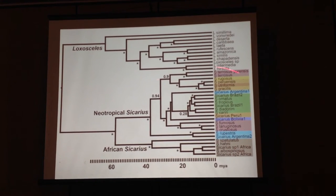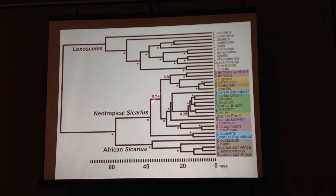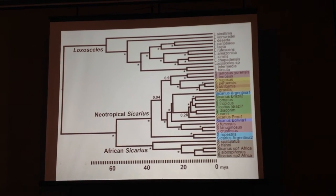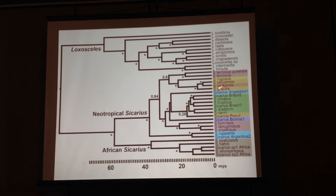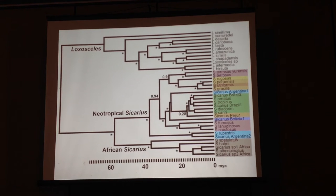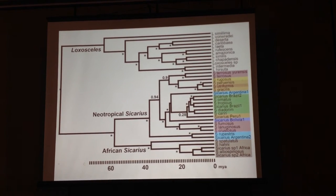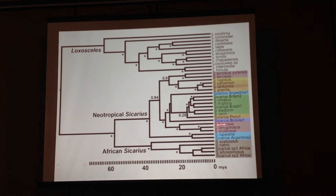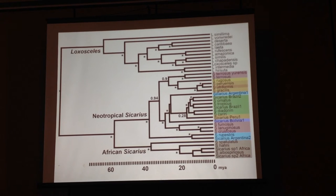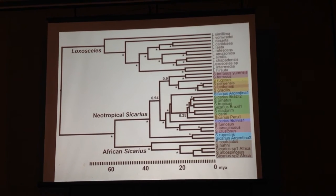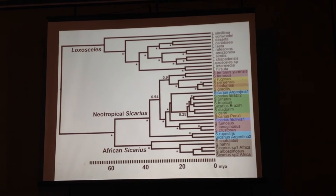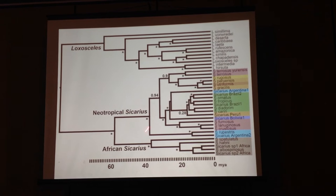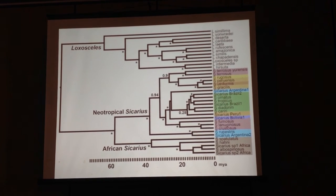We have a monophyletic Sicarius, and a very nice pattern where the neotropical Sicarius are monophyletic, and sister to a monophyletic group of African Sicarius. The color codes represent the region where they come from, and we can see that there is very high geographic structuring in the phylogeny. For example, all species from Brazil form a monophyletic group in green, this group is from Chile, this one from Argentina. Some countries have more than one lineage but generally the phylogeny is geographically structured. The divergences are pretty old — the group has been diversifying in the neotropical region for at least 40 million years.